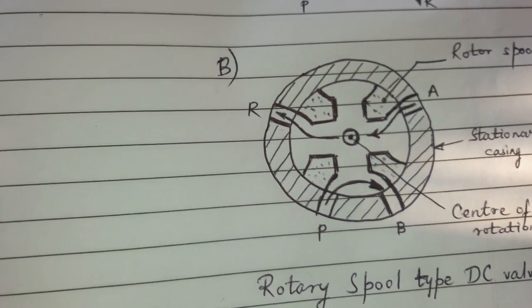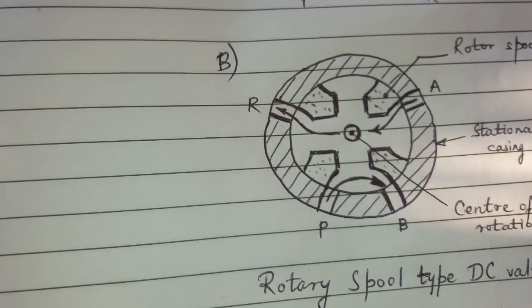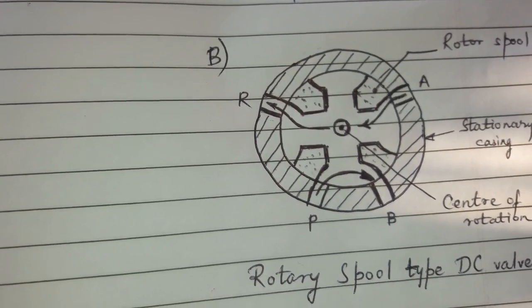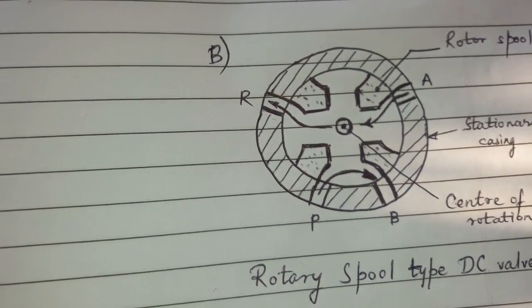Advantages. Rotary spool type DC valve is compact and simple in design. It is having low operating force.